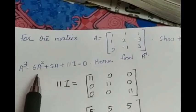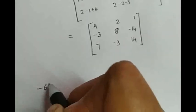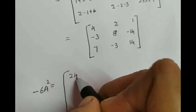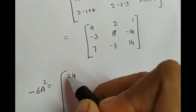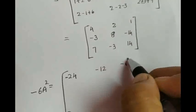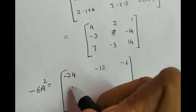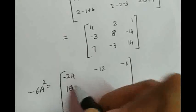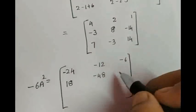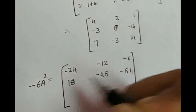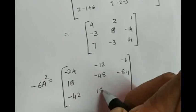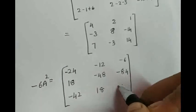But the term we require is minus 6A square. So, minus 6A square will be equal to — multiply each element with minus 6 — giving: minus 24, minus 12, minus 6, 18, minus 48, 84, minus 42, 18, minus 84.